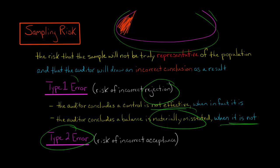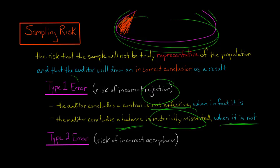A type 2 error is the opposite. With a type 2 error, you're saying the controls are effective when in fact they're not. Or you're looking at the balance and saying the accounts receivable balance isn't overstated at all, everything is fine — when in fact, if you were to see the entire population, you would draw a different conclusion as the auditor and say it is overstated. That's the difference between type 1 and type 2 errors.